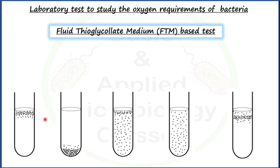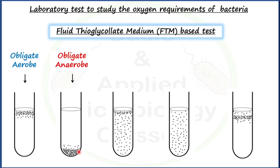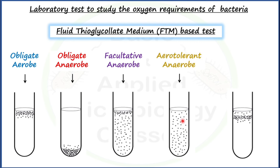If growth is restricted to the topmost upper layer of the medium, the bacterium is an obligate aerob, since it strictly requires high oxygen concentration. If growth is only at the bottom, it is an obligate anaerob. Growth throughout the medium but better at the top indicates a facultative anaerob. Equal growth in upper and deeper layers indicates an aerotolerant anaerob. A band of growth in the subsurface layer indicates a microaerophile.